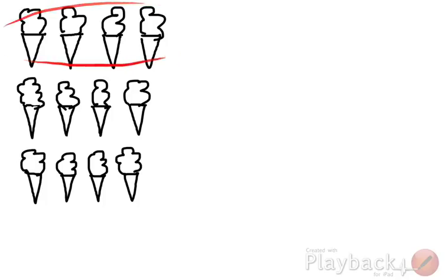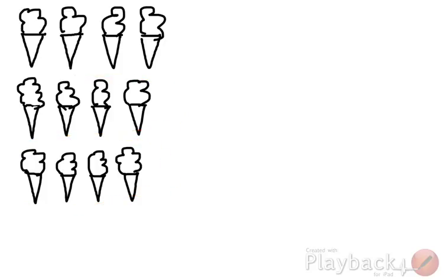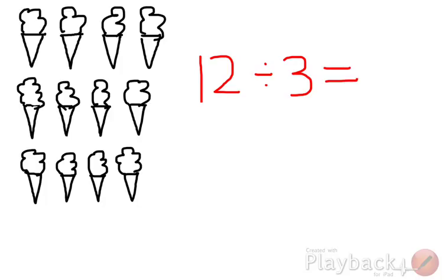We have to give 4 to each friend. Or we can say when 12 is divided among 3 friends, each friend gets 4. We write it as 12 divided by 3 is equals to 4.